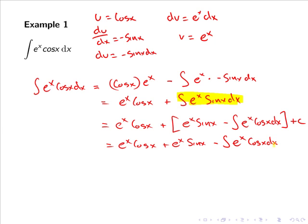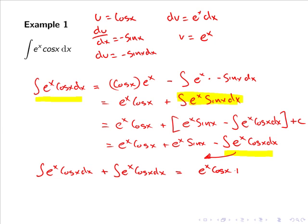We now have an algebraic expression which involves what we started out with on both the left-hand and right-hand side. By considering this integral as a variable, we can bring over what's on the right-hand side to the left-hand side and solve for this integral. Bringing the integral of eˣ cos(x) dx to the left-hand side, we have two times the integral of eˣ cos(x) dx equals eˣ cos(x) plus eˣ sin(x) plus c.